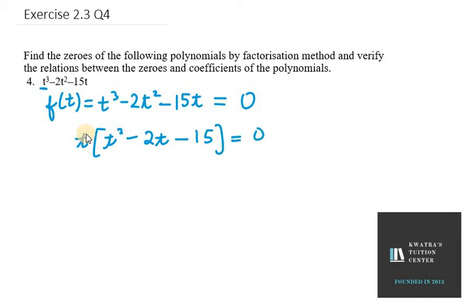So we are left with t squared in the first term, then minus 2t, then we have minus 15 equals 0. Now what we can do is we can apply middle term splitting in the bracket part as it is a form of quadratic equation.